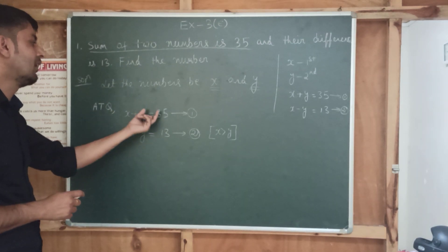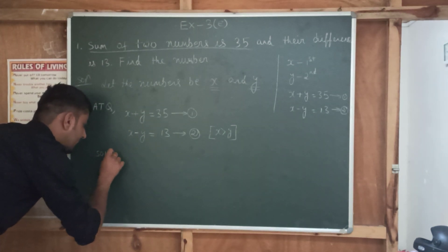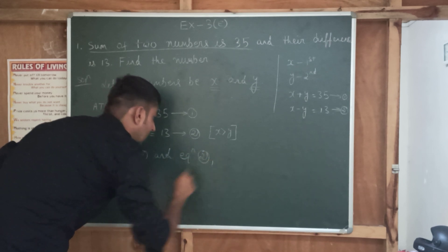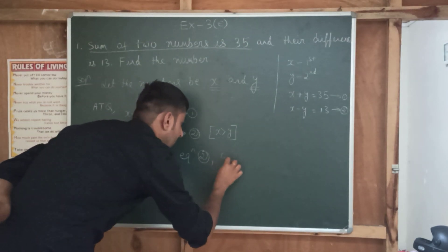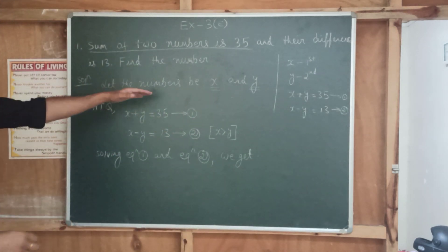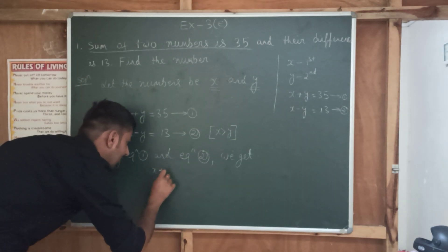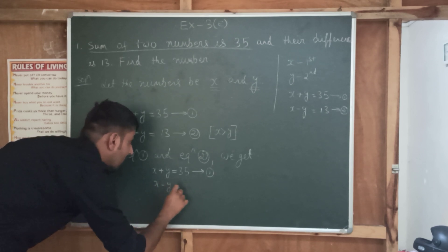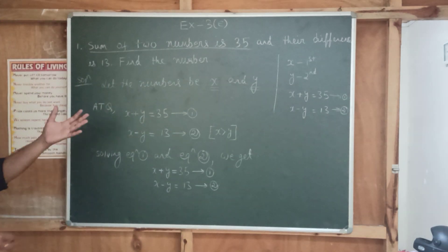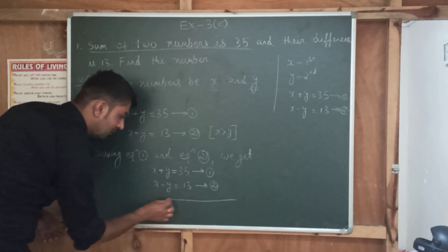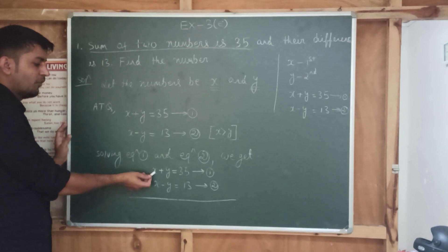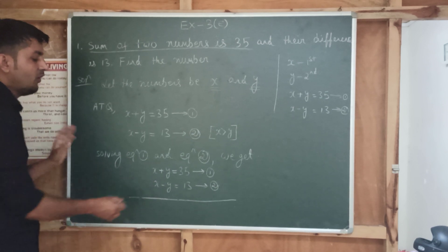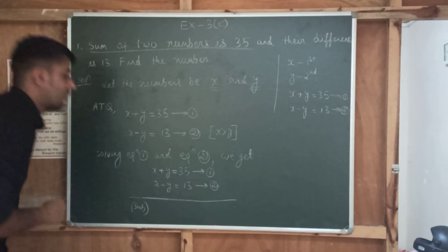I'll be using the elimination method, as it is the simplest way of solving a linear equation. So let's solve equation number 1 and equation number 2. You write down: X plus Y is equal to 35 — equation number 1; X minus Y is equal to 30 — equation number 2. In the elimination method, you look at the coefficients. The coefficient of X is 1 in both equations, meaning the coefficients are already equal, so you can subtract.